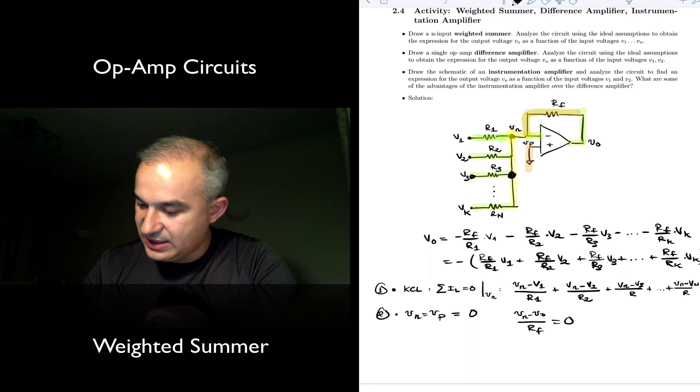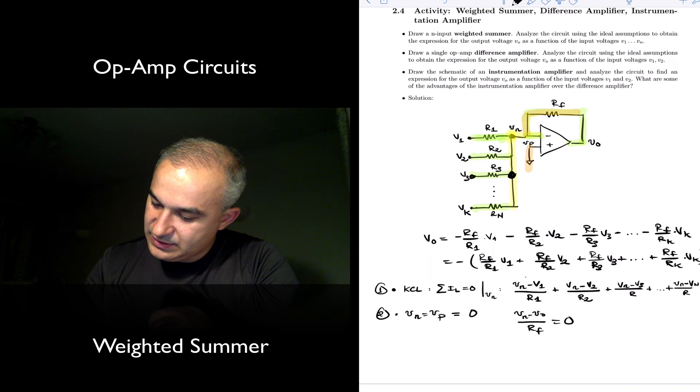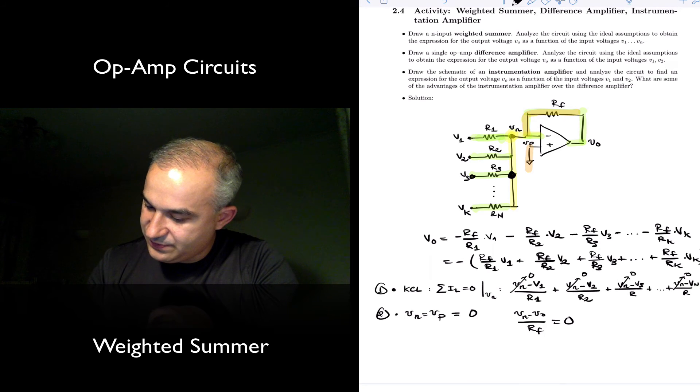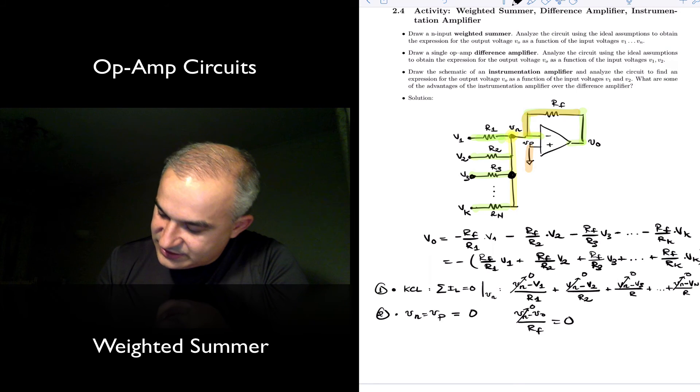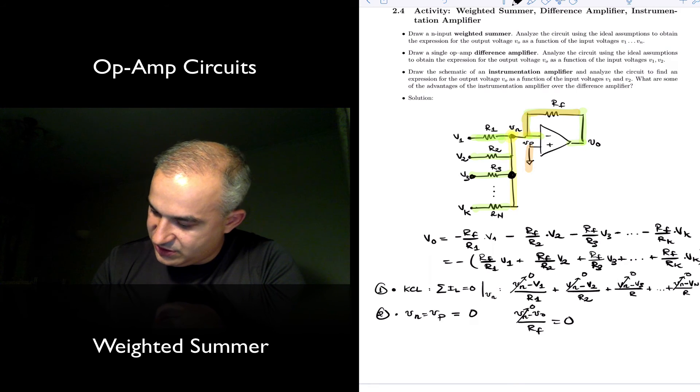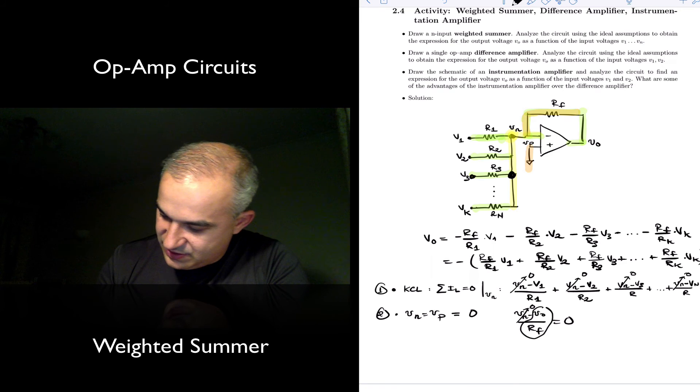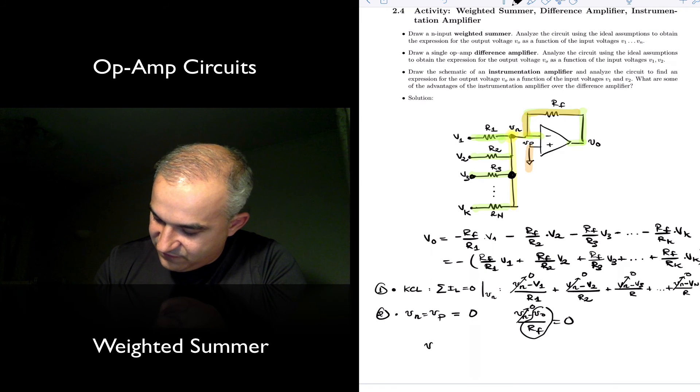Which means that we can, this Vn is zero everywhere here, zero, zero, zero, zero. And so what you find is that you get the only output is here. You get V output over RF is equal to.